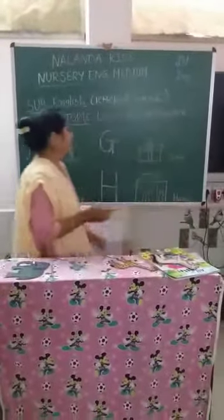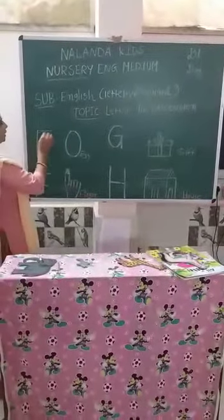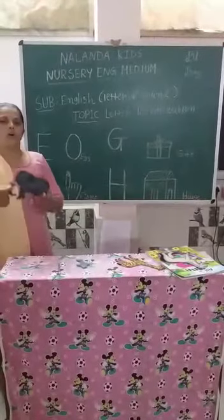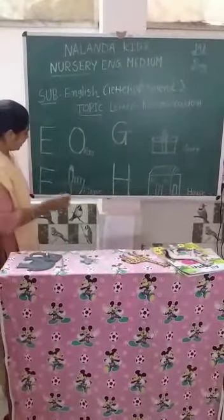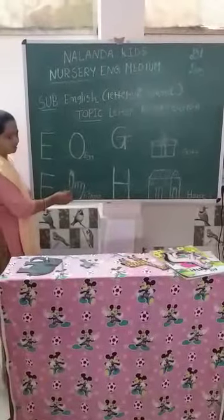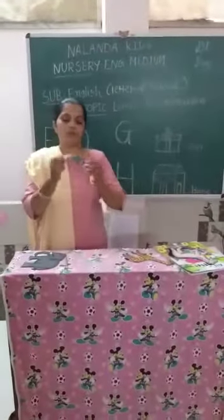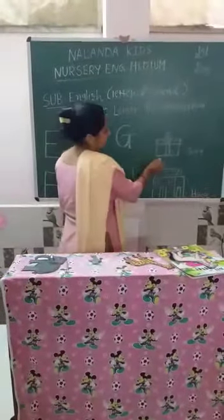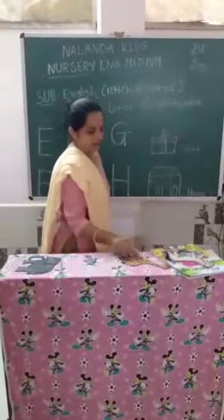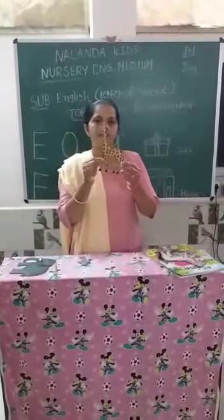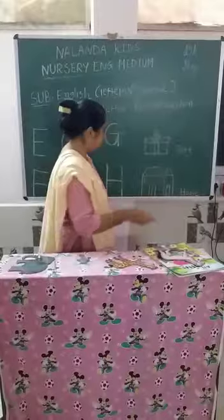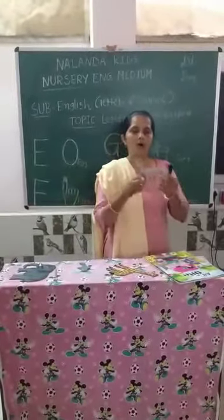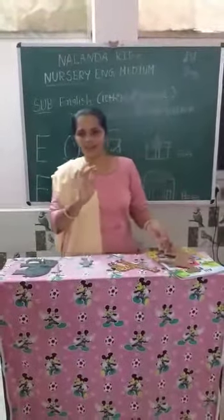Second time: E for egg and E for elephant. F for finger and F for face. G for gift and G for zebra. H for house and H for horse. Okay, thank you.